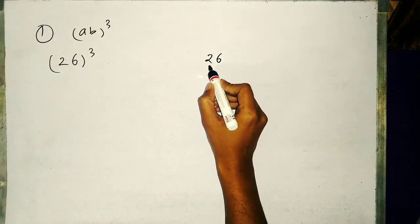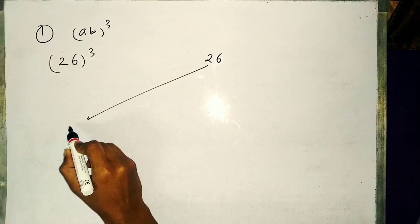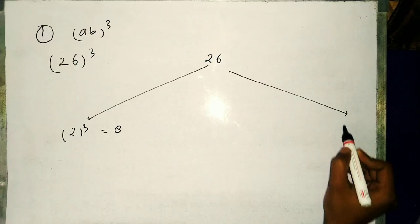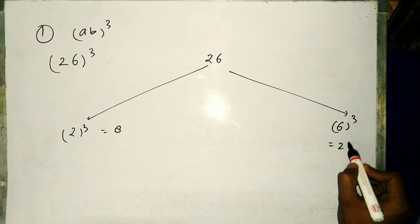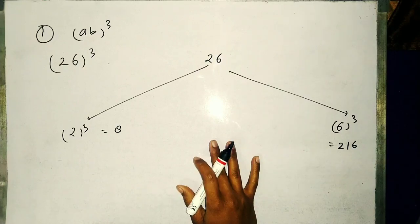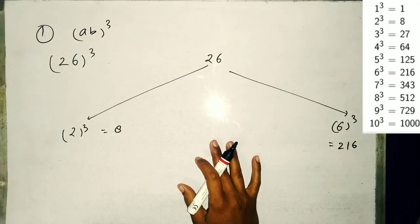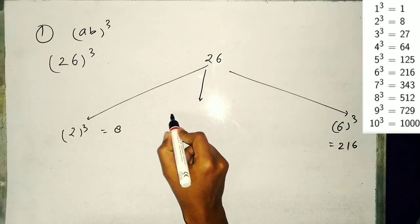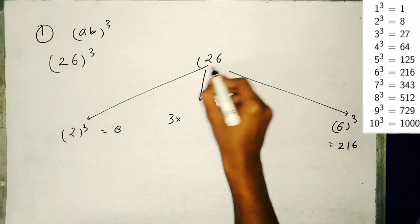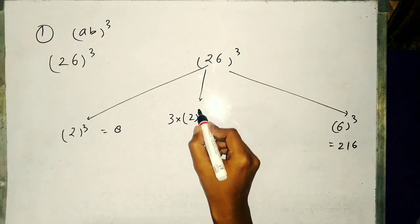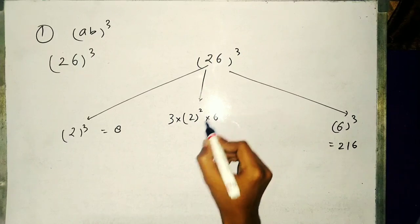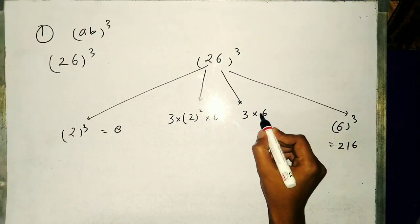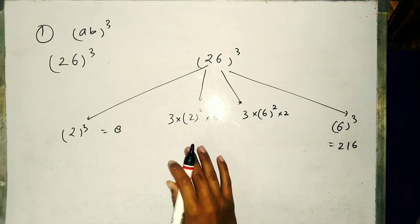First, we have to write cube of 2 which is 8 and cube of 6 which is 216. For finding the cube with a short trick, we have to know the cube of digits 1 to 10. Step 2: 3 into square of first digit into second digit.